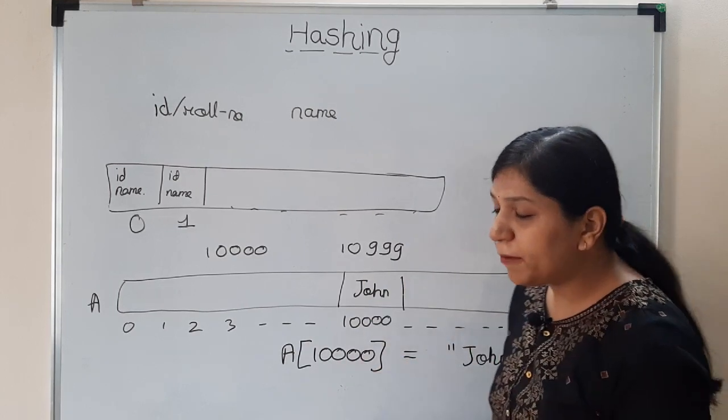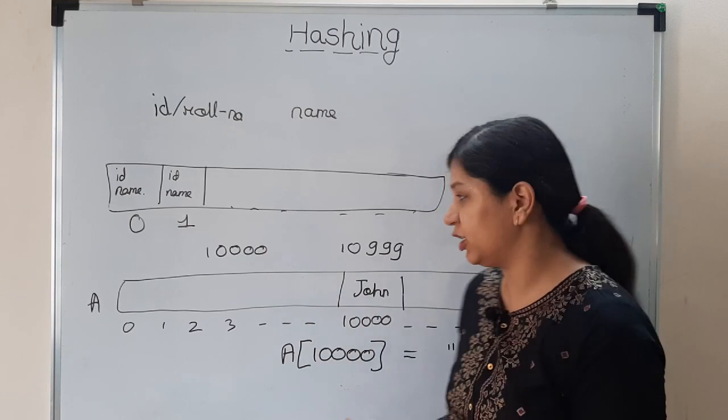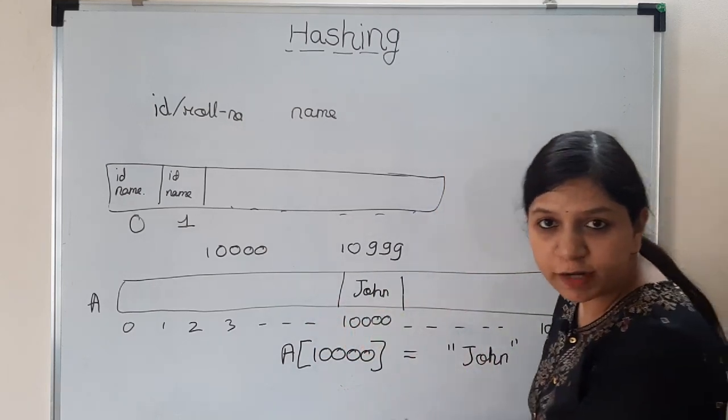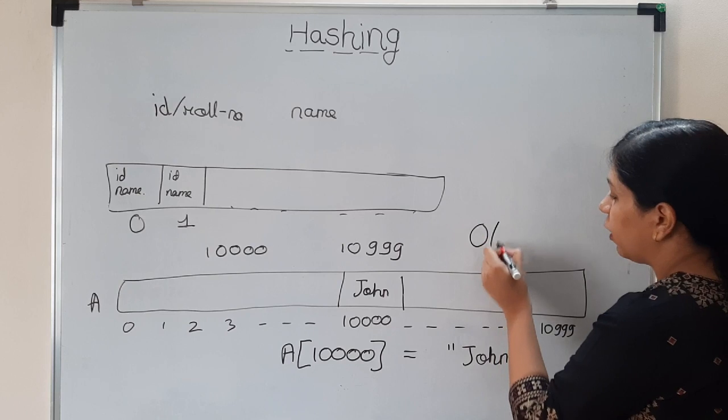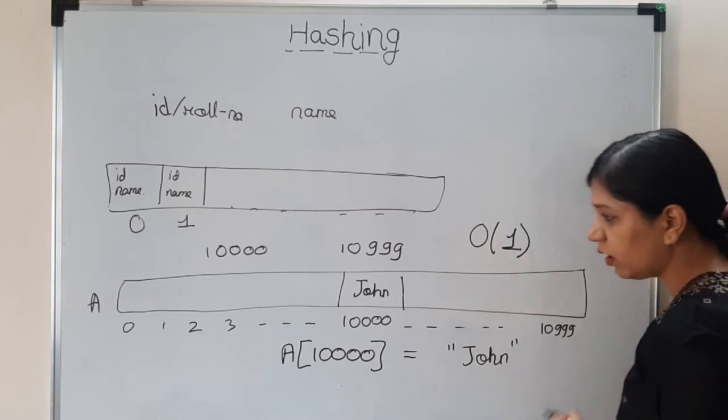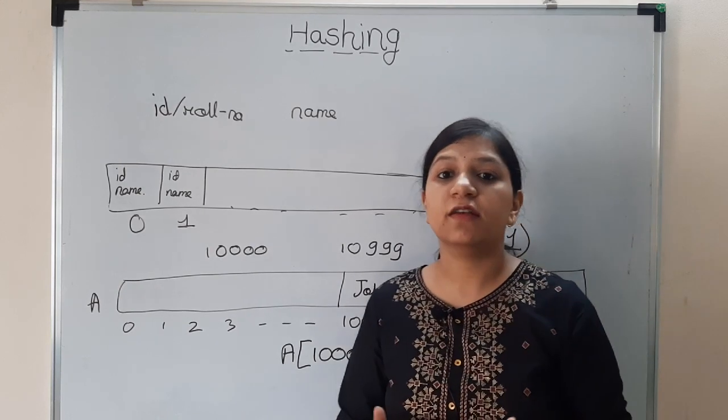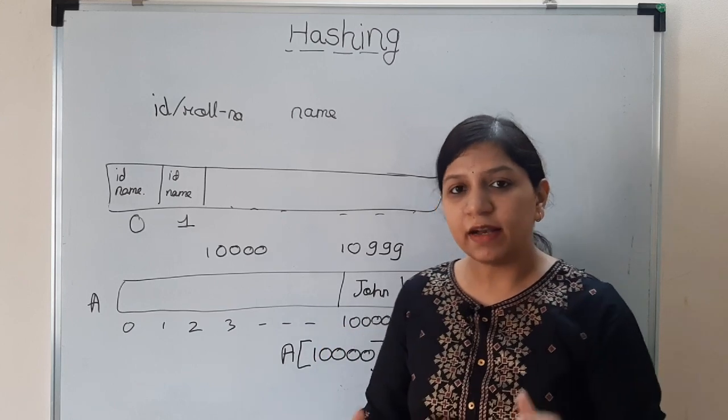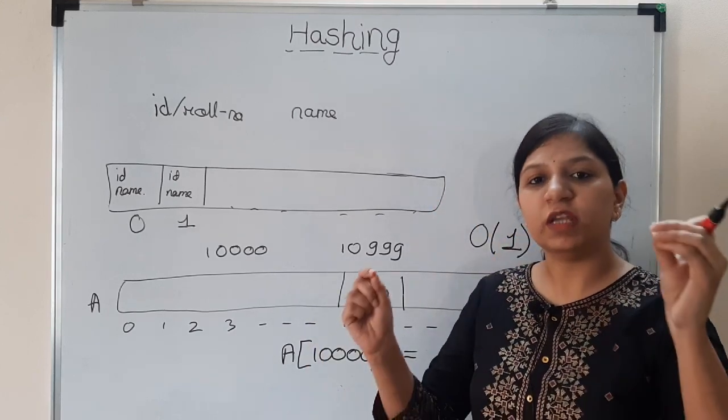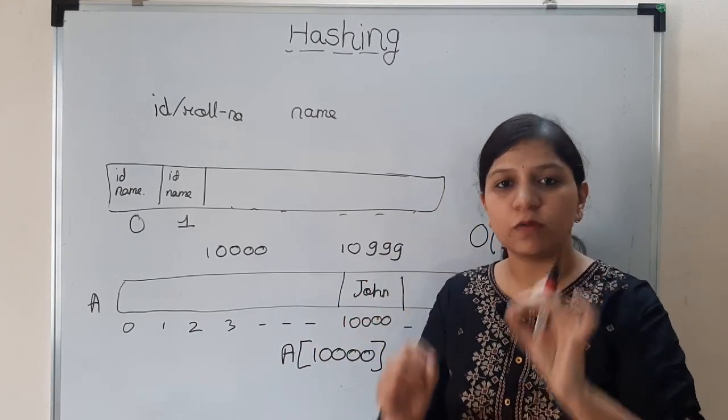So now if somebody asks you what is the name of the student whose roll number is 10,000, you can quickly go at index 10,000. Suppose the name of array is A, then A[10,000] is going to give you John. So you are able to do the search operation in constant amount of time. This is called O(1).